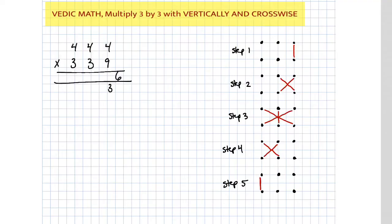Okay, step 2 is a crosswise. 4 times 9 plus 3 times 4. I'll go ahead and write that out. 4 times 9 plus 3 times 4. So we got 36 plus 12. That's gonna give us 48.